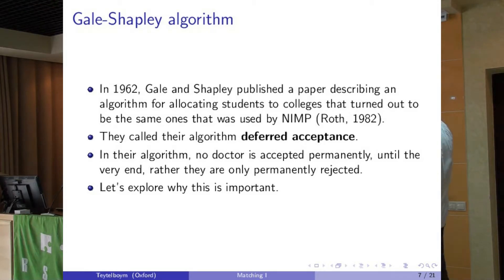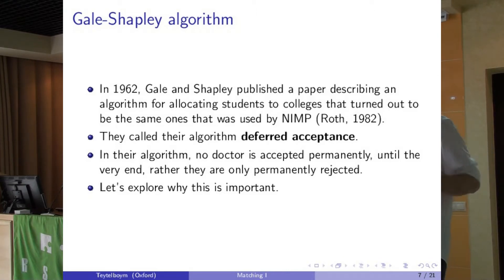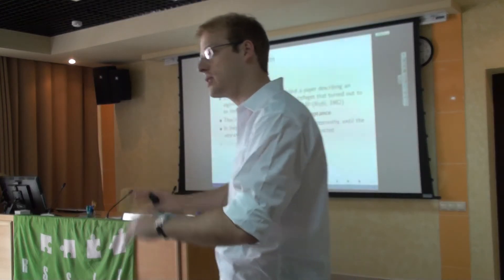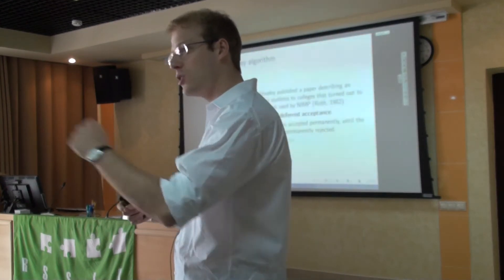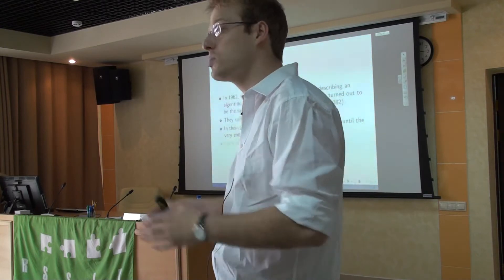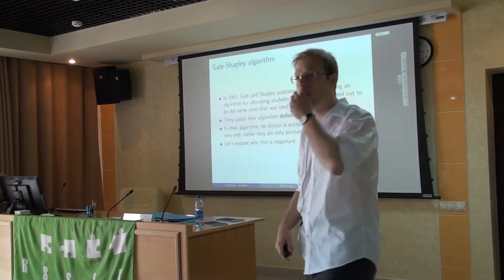Gale and Shapley called their algorithm deferred acceptance. What happens in their algorithm is that rather than accepting doctors immediately, you defer your acceptance until the very end. All the acceptances that get made are temporary. When a hospital accepts a particular student, or as a medical student you accept a particular hospital, it will be a temporary thing. So all the things will only clear right at the end. We'll explore why this is important.